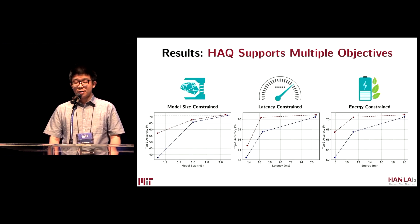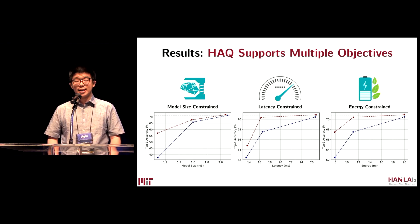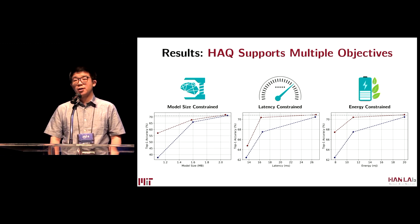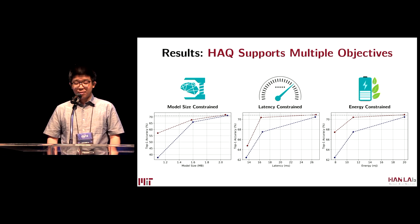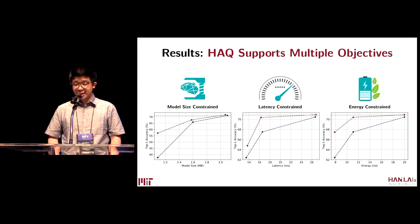Apart from reducing the model size, which has been widely explored, our HAQ supports multiple objectives, including reducing latency and energy. Energy is an aspect that hasn't been explored before. However, it is very critical, as a lot of edge devices such as mobile phones and self-driving cars are strictly battery constrained. Given a specific energy budget, our HAQ framework can offer the best quantization policy it has explored, and we can see that it significantly outperforms the uniform quantization baseline.